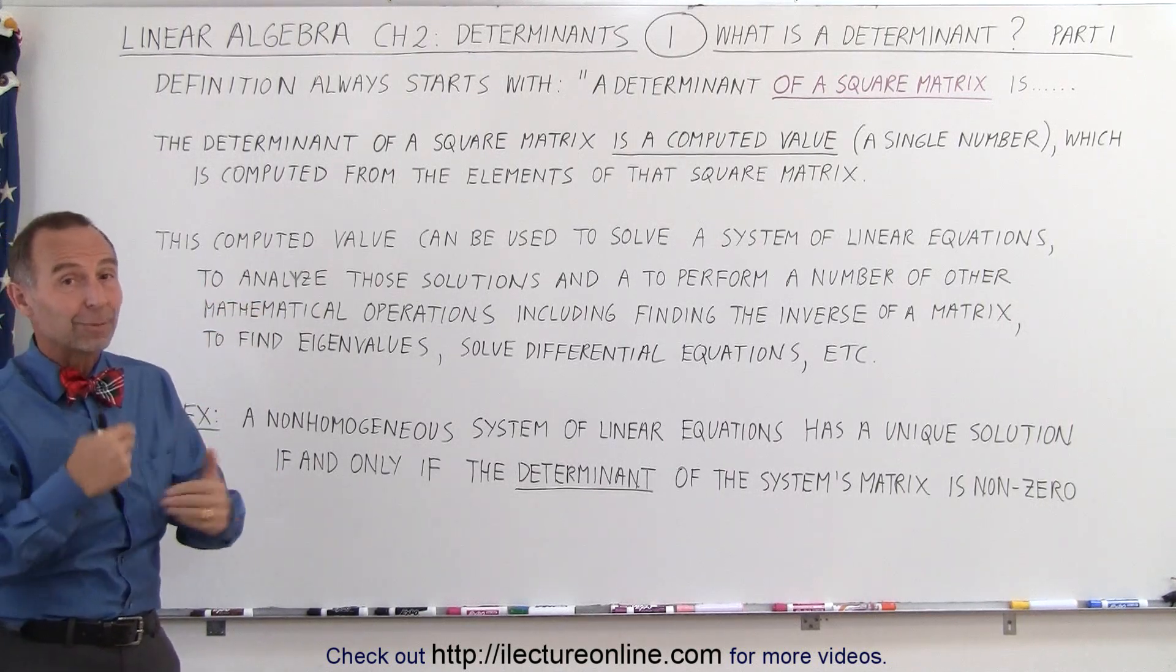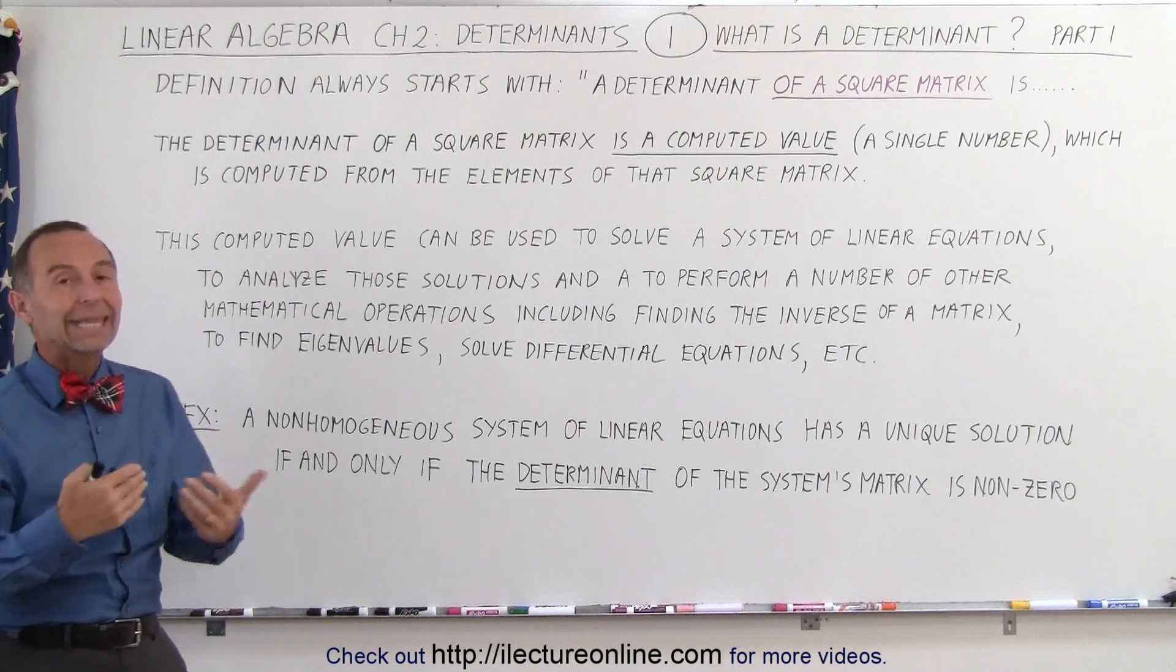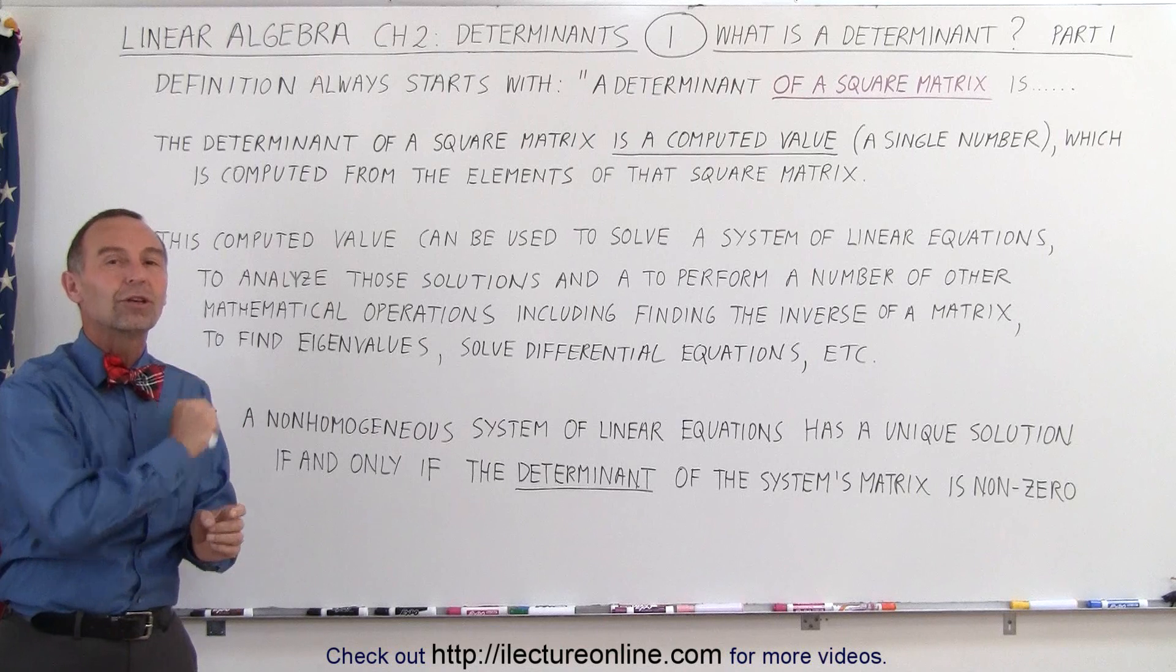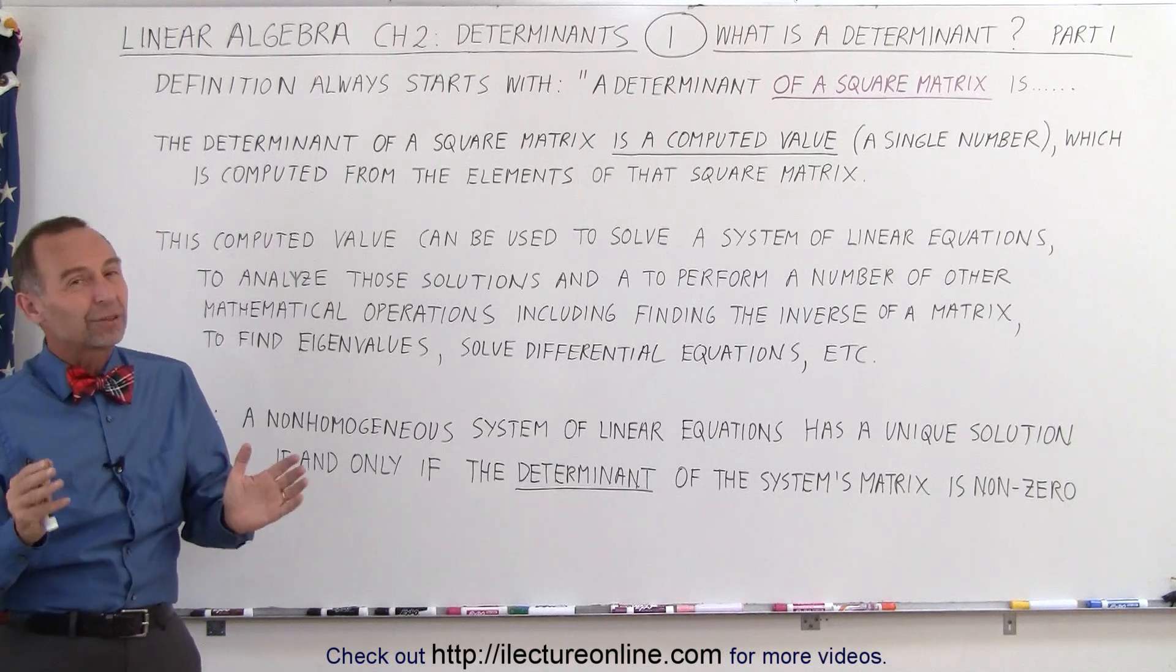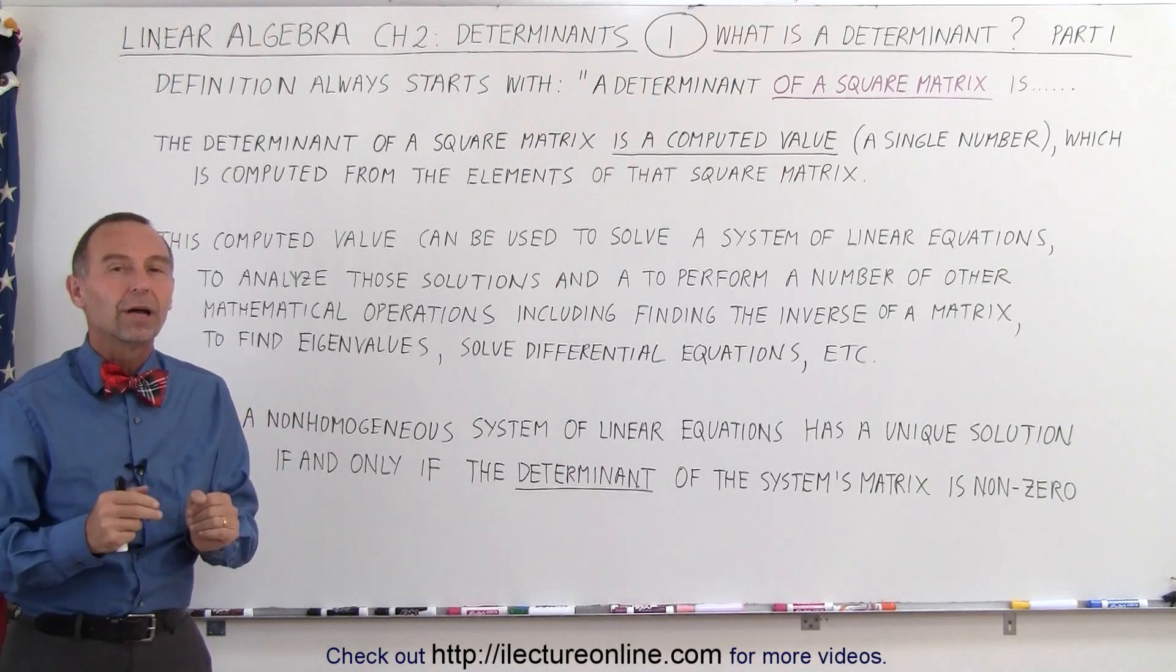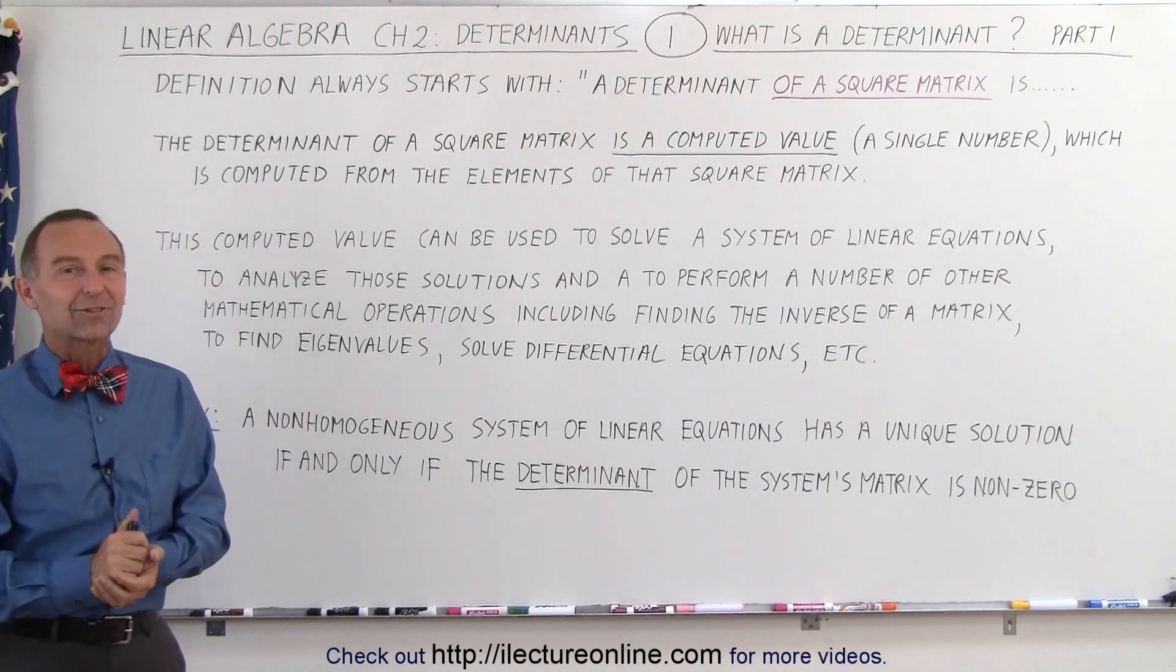It has to be an n-by-n square matrix, and then you can find all kinds of other things from that matrix using determinants. Hopefully that's a good start. We have a few more videos that will zero in a little bit more about what a determinant actually is.